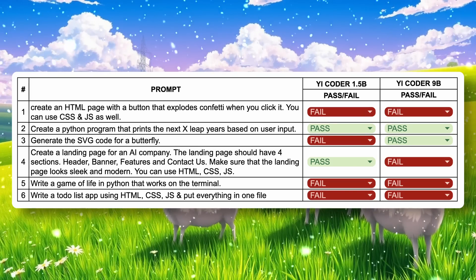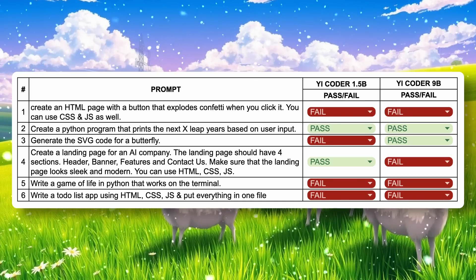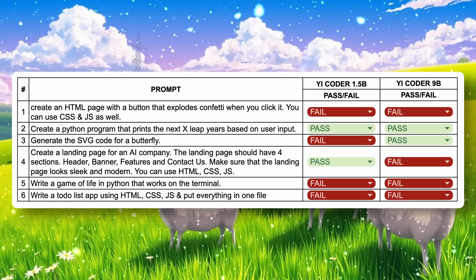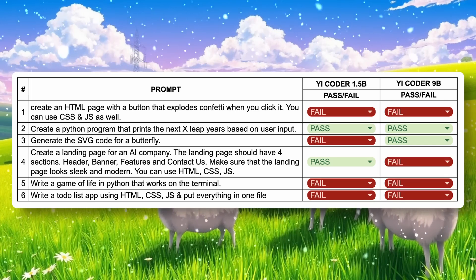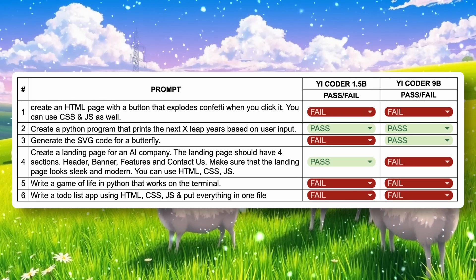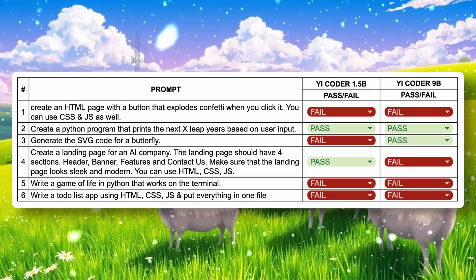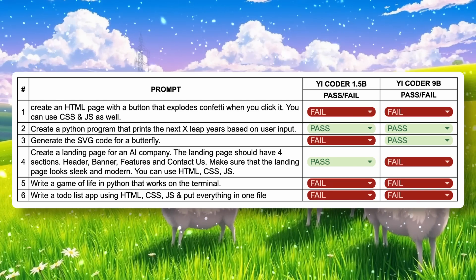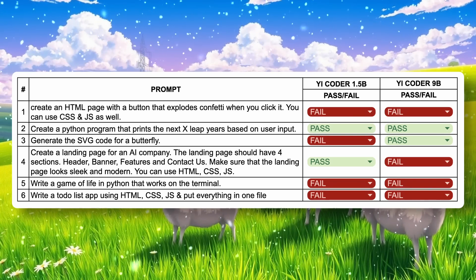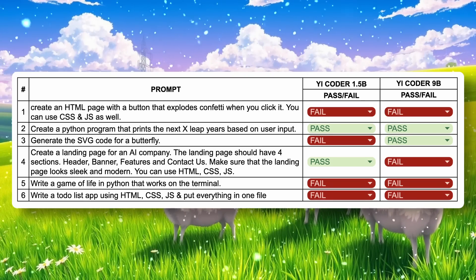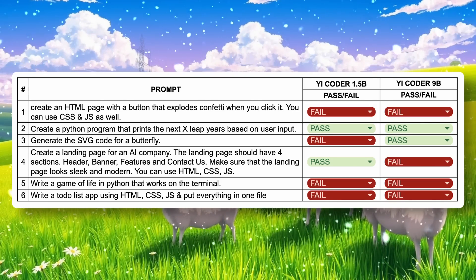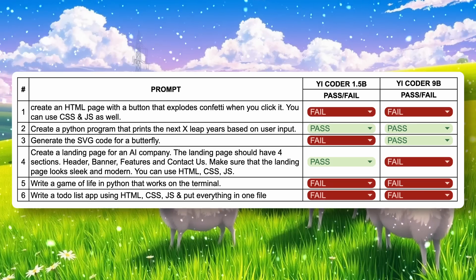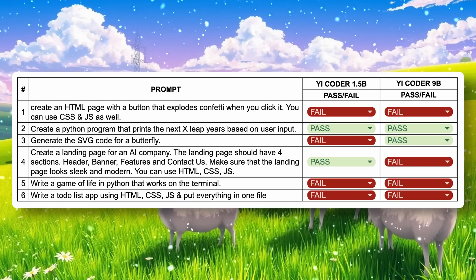Here's the final chart. The 1.5b model only passed two questions, and the 9b model also only passed two questions. I think the models are fine considering their size, but they could have been better. The 1.5b model is pretty good for its size and could be useful for auto-completion and similar tasks. The 9b model is good but also limited. I think it could be useful for small refactoring and tasks where the 1.5b model becomes limited. Both models have some good use cases, and I especially like the 1.5b model. Overall, it's pretty cool.